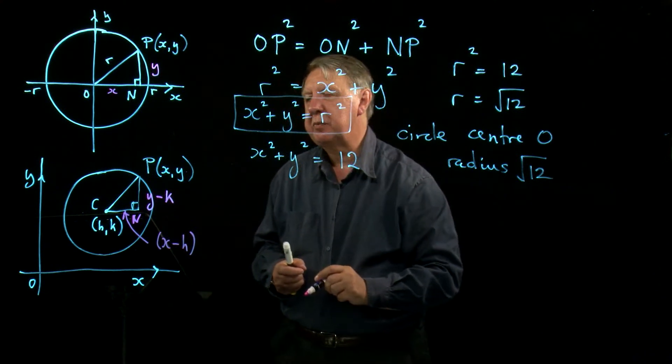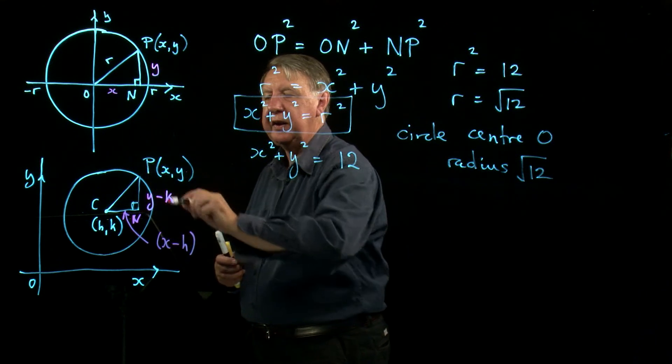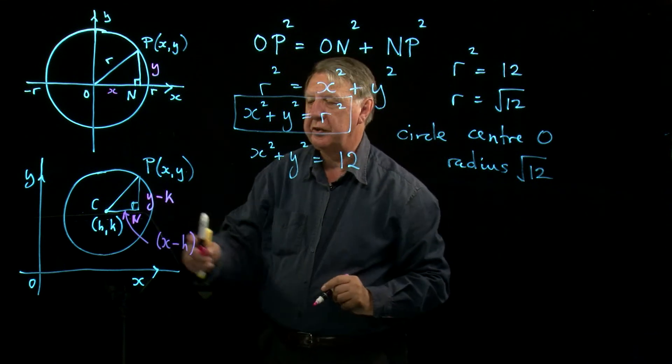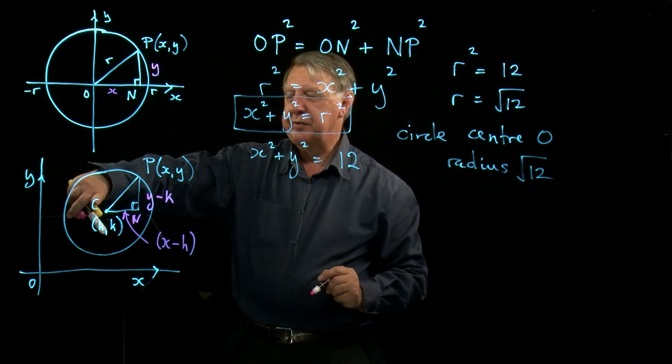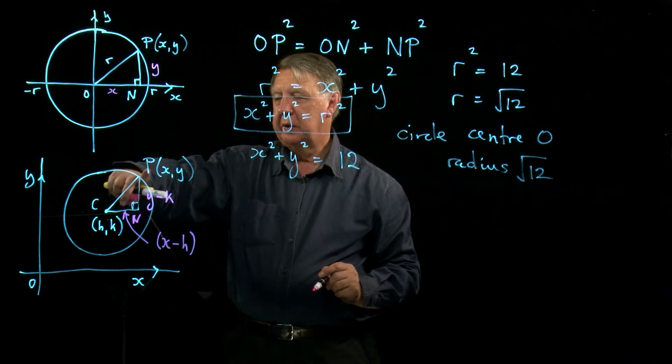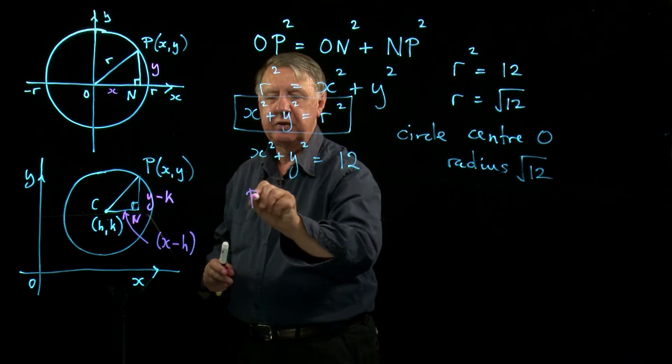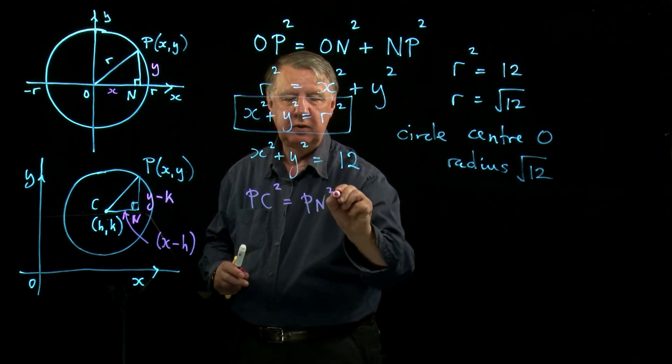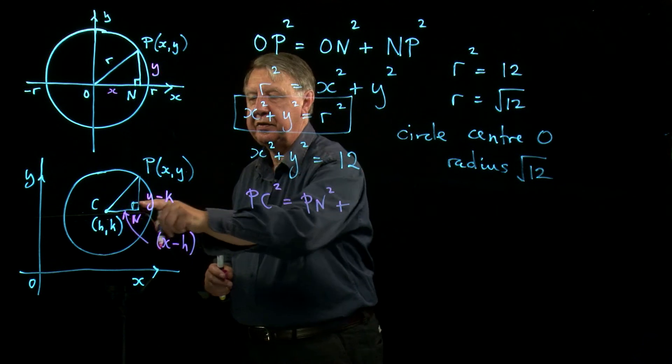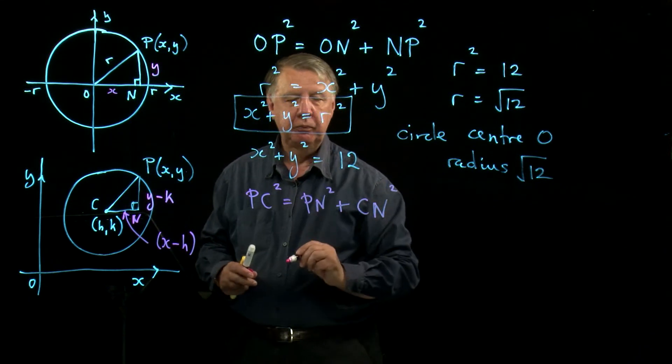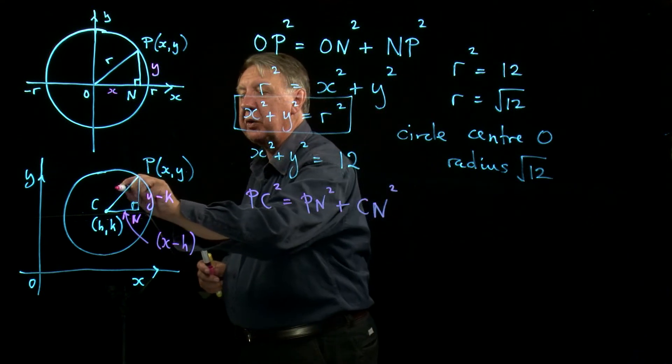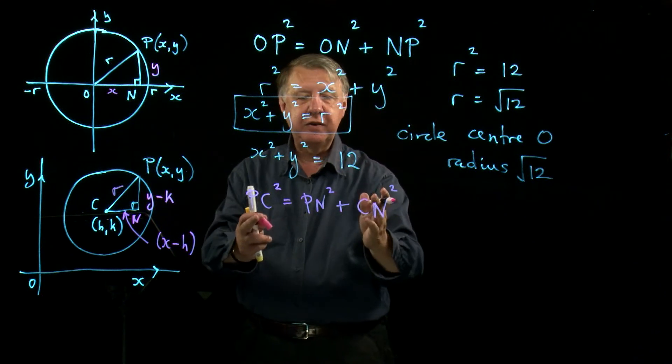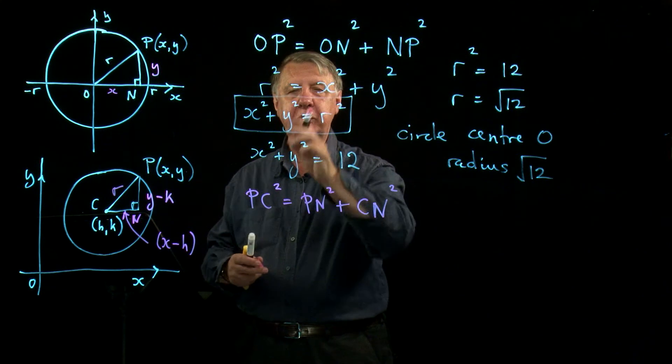So Pythagoras' theorem this time tells me that PC, I can't use O for this point because I'm still using O for the origin, so C is a pretty good letter for center. So PC squared will equal PN squared plus CN squared. And there's no reason why I can't use R for the radius as well. So again, let's turn this around the other way.